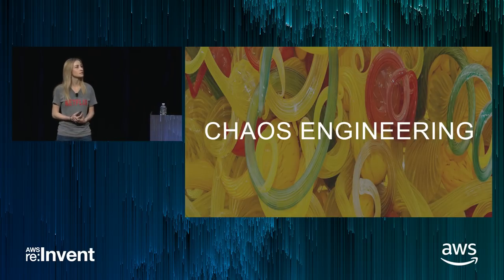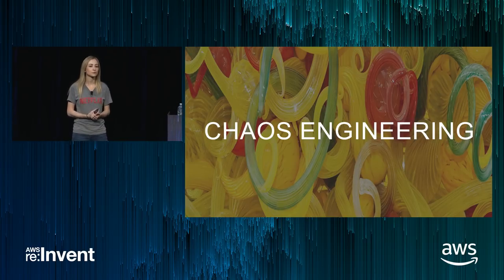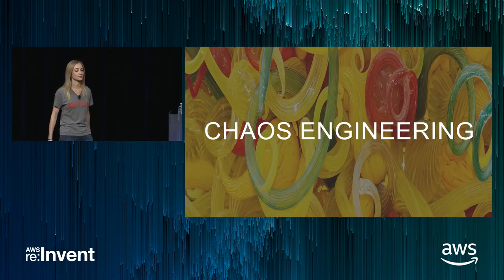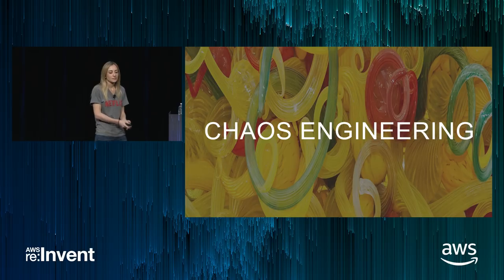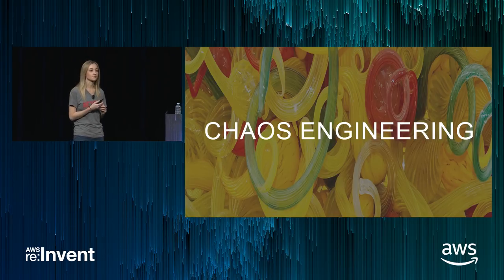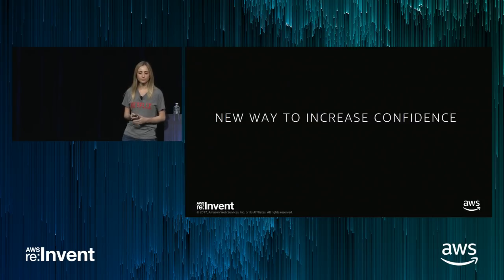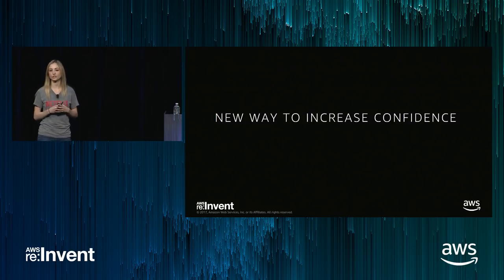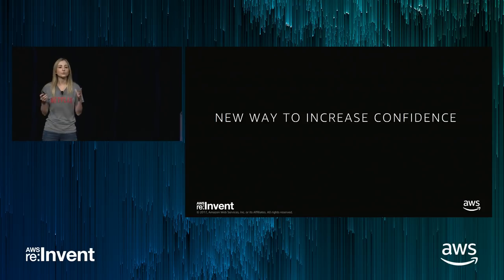Now that we've addressed some knowns, let's define chaos engineering. My name's Nora Jones. I'm a senior chaos engineer at Netflix. I've previously had the opportunity to work at startups and execute chaos on that scale, and now I'm getting to execute chaos on Netflix scale. Chaos engineering is a discipline of experimenting on a distributed system in production in order to build confidence in the system's capabilities to withstand turbulent conditions. It's a new way to increase confidence.